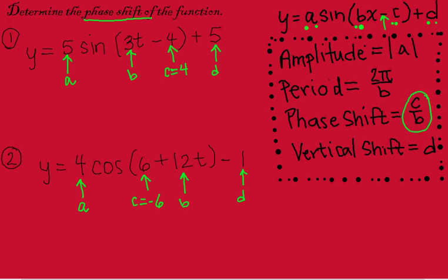So this is the only formula I'm concerned with. Okay, so if we look at here, we have c is 4 and b is 3. So in this case, our phase shift is going to be 4 over 3.